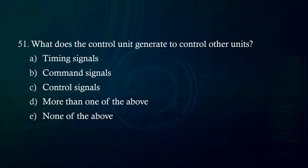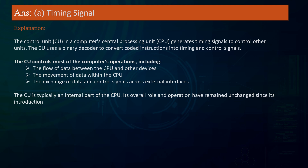What does the control unit generate to control other units? A. Timing signals B. Command signals C. Control signals D. More than one of the above E. None of the above. Answer: Timing signals. Explanation: The control unit (CU) in a computer's CPU generates timing signals to control other units. The CU uses a binary decoder to convert coded instructions into timing and control signals. The CU controls most of the computer's operations, including the flow of data between the CPU and other devices, the movement of data within the CPU, and the exchange of data and control signals across external interfaces.